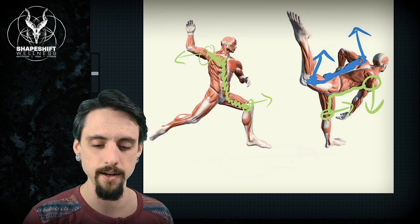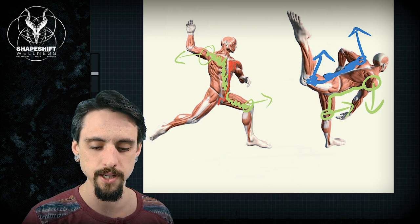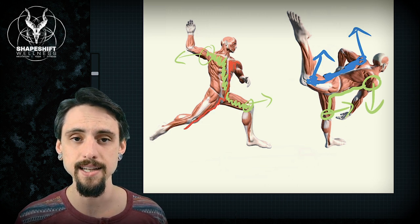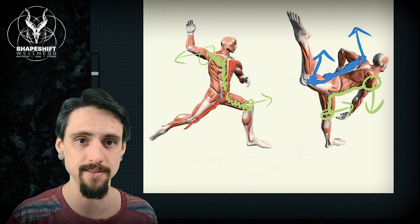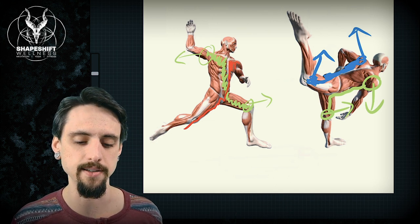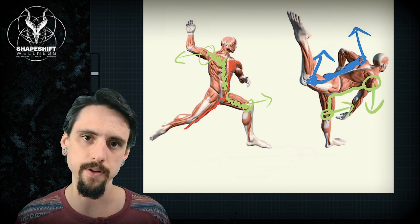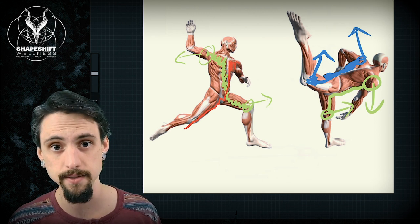So here's your front functional line again. So if we take the front functional line on the left side down into the right leg, that side needs to just be chilling out. Those muscles need to relax, kind of. They need to not be super active so that the right-sided front functional line can be active.